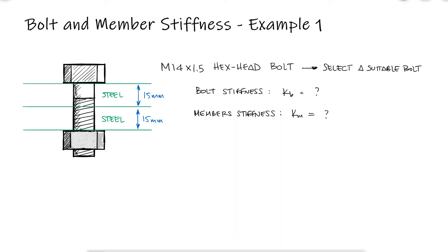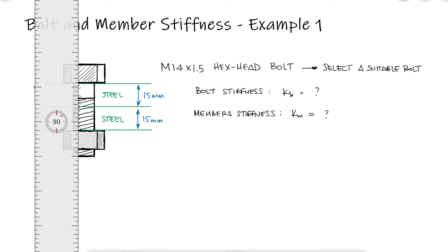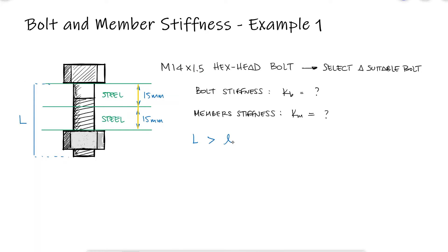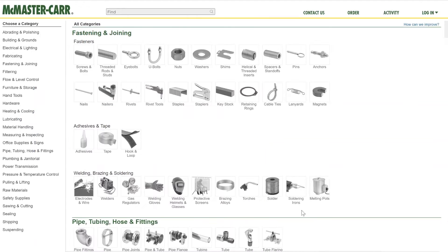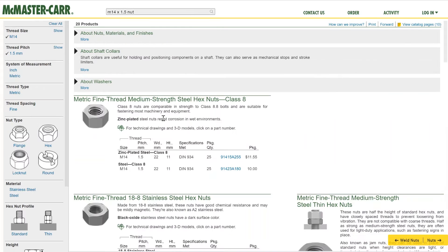Choosing a nut and bolt that will work for this application comes down to selecting an M14 bolt with a 1.5mm pitch that has a length greater than the members or grip L plus the height of the nut. By looking up an M14 with a 1.5mm pitch nut, we find that for a regular class 8 steel, its height is 11mm.